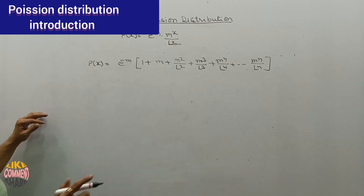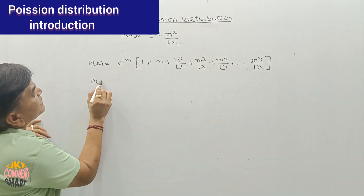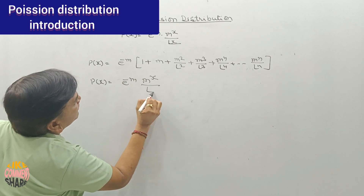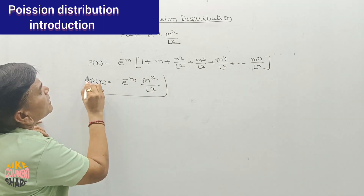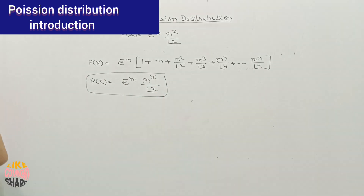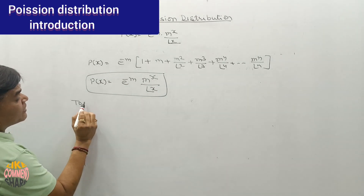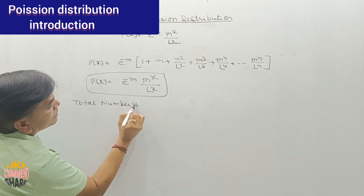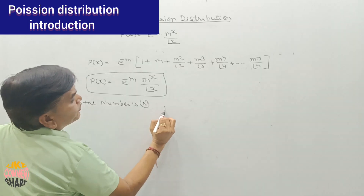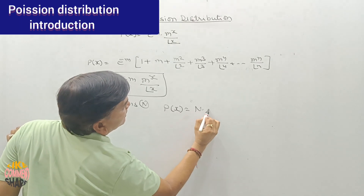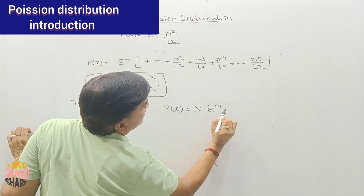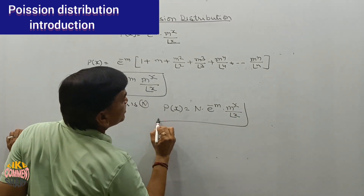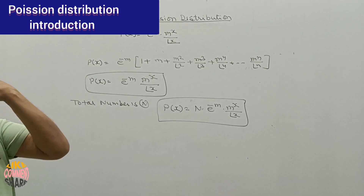So we can write P(x) equals e raised to power minus m, times m raised to power x divided by factorial x. This is the formula for Poisson distribution. If the total number is N, then the expected frequency is N times e raised to power minus m, times m raised to power x divided by factorial x.